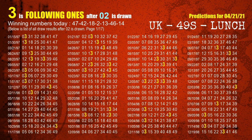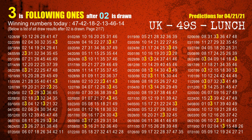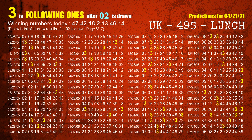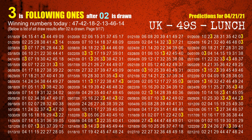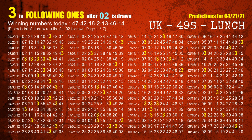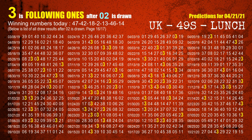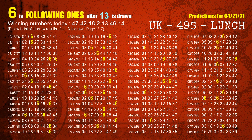The fourth winning number is 02. The most frequently following units digit is 3 when 02 is the winning number in the last draw. The fifth winning number is 13. The most frequently following units digit is 6 when 13 is the winning number in the last draw.